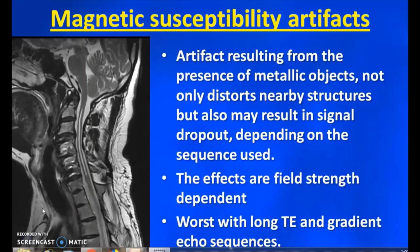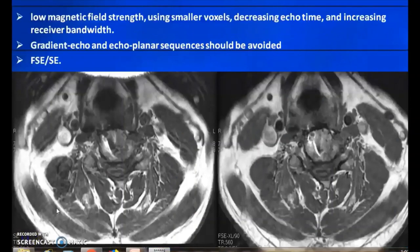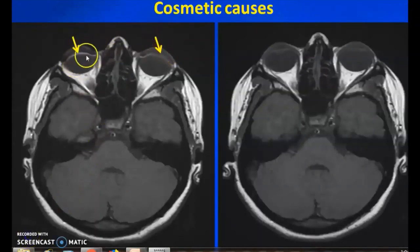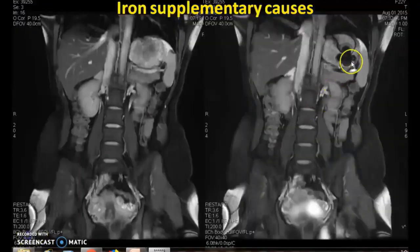Another common artifact is the magnetic susceptibility artifact, resulting from the presence of metallic objects causing signal distortion in nearby structures as well as signal dropouts. Depending on the sequence used — long TE and gradient sequences worsen this. The remedy includes using a lower magnetic field strength such as 0.35T or 0.2T, increasing matrix size, decreasing echo time, and increasing receiver bandwidth. Sometimes mascara or eyeliner causes this type of artifact — demonstrated by susceptibility artifact seen with eyeliner, and after its removal the artifact disappears. Iron supplements also create this type of susceptibility artifact.